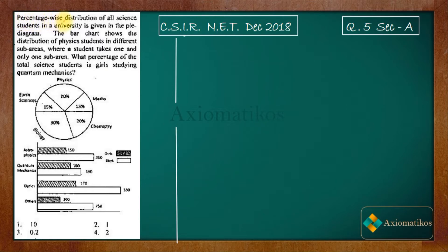Percentage-wise distribution of all science students in a university is given in the pie diagram. The bar chart shows the distribution of physics students in different sub-areas, where a student takes one and only one sub-area. What percentage of the total science students are girls studying quantum mechanics? That is your problem.